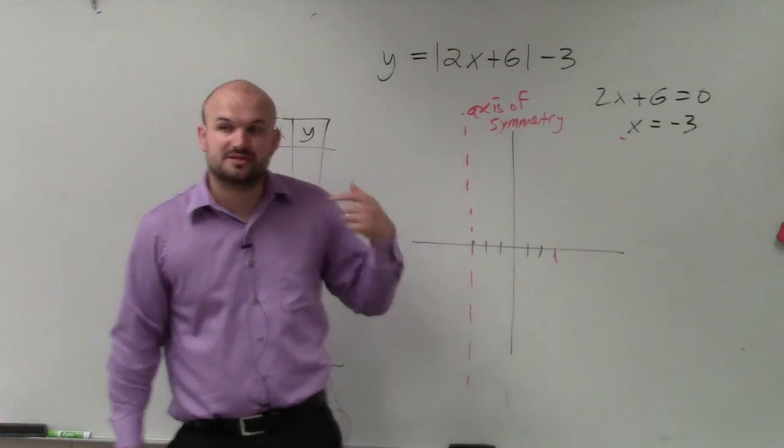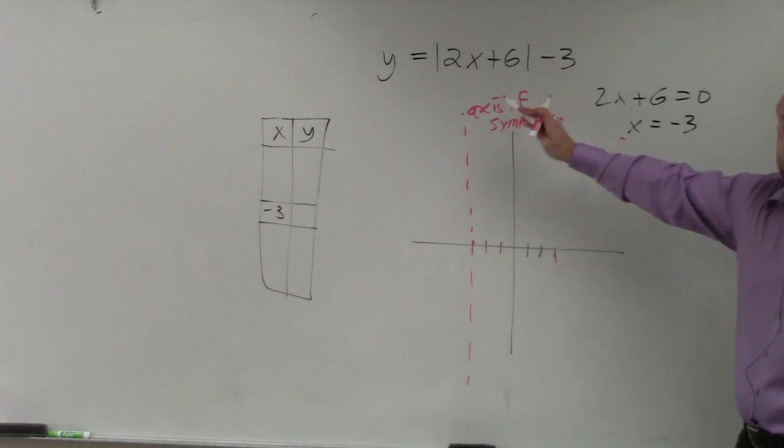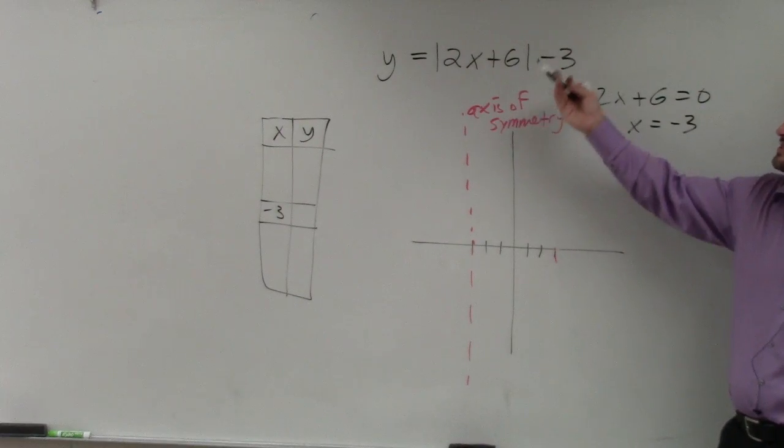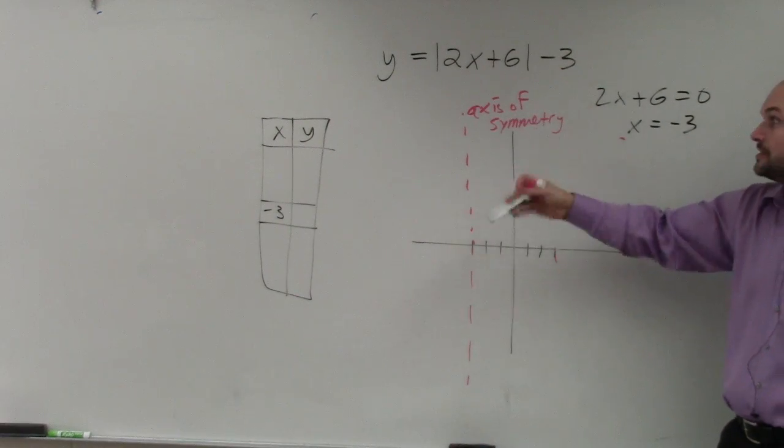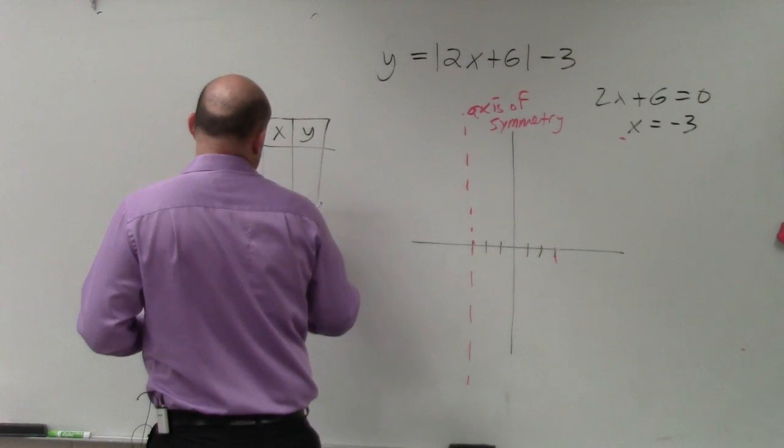So to make this video kind of short, I'm just going to say this out loud. If you plug in negative 3 in for x, you have 2 times negative 3, which is negative 6. Negative 6 plus 6 is 0. Absolute value of 0 is 0. 0 minus 3 is negative 3. So now I plot that point.